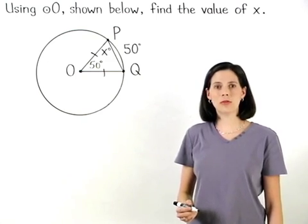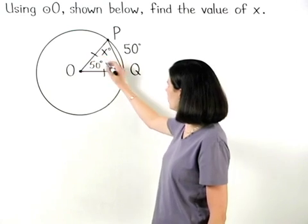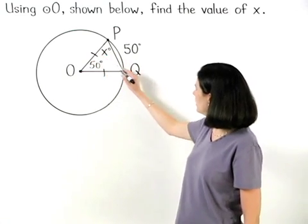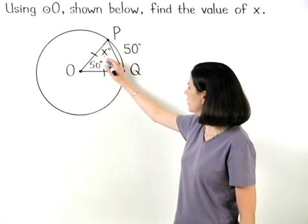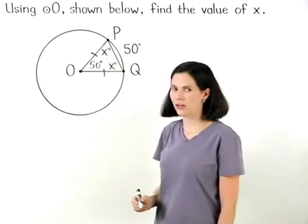Remember that if two sides of a triangle are congruent, then the angles opposite those sides are congruent. So if angle P measures x degrees, then we know that angle Q must also measure x degrees.